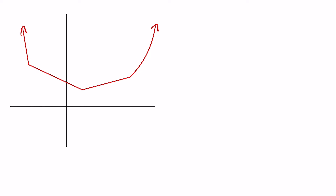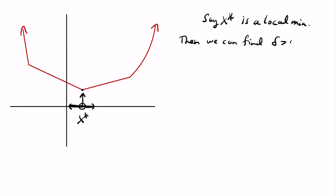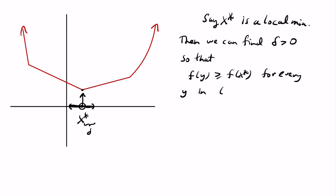We need to recall what a local minimum is. If you pick a point x*, it is a local minimum if you can find a small neighborhood around it such that the function value at x* is smallest among all points in that interval. Formally, x* is a local min if there exists delta > 0 such that f(y) ≥ f(x*) for every y in the interval (x* − delta, x* + delta).